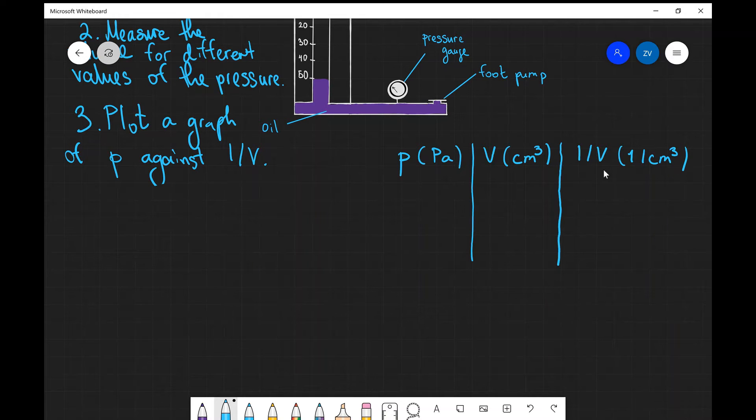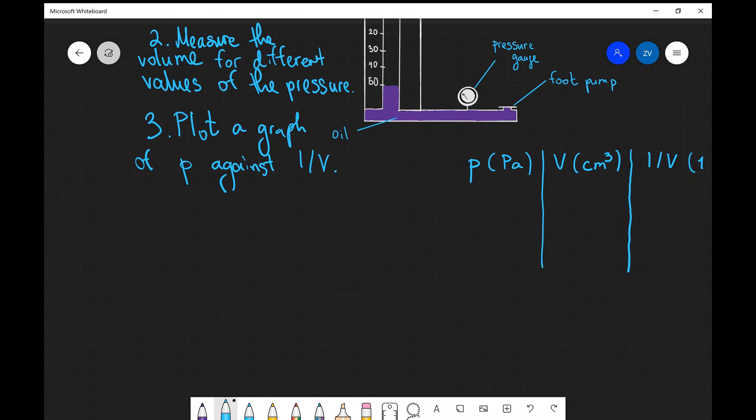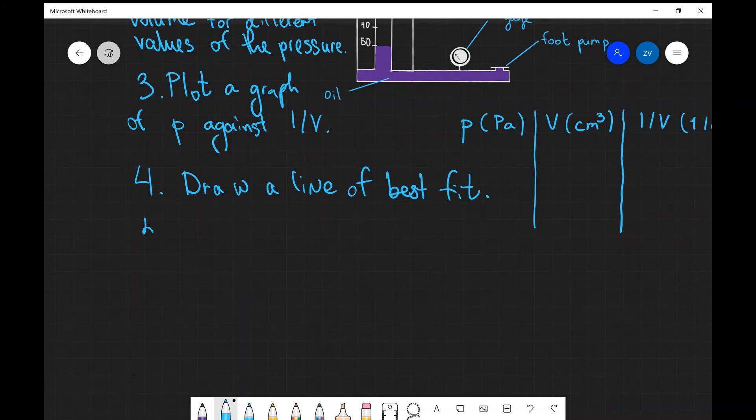Once we have plotted that graph, we'll need to draw a line of best fit. The final comment is actually really important in performing this experiment: if the relationship between P and 1/V is linear, that means that Boyle's law has been proved.